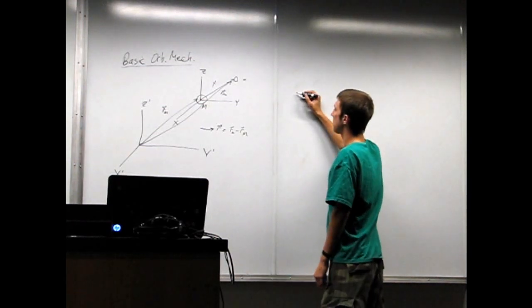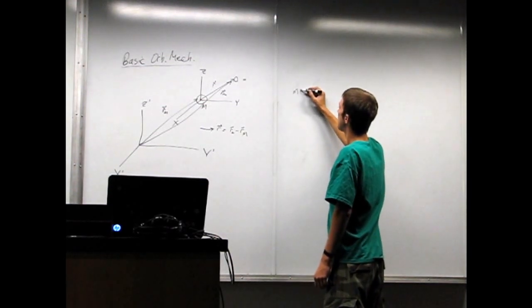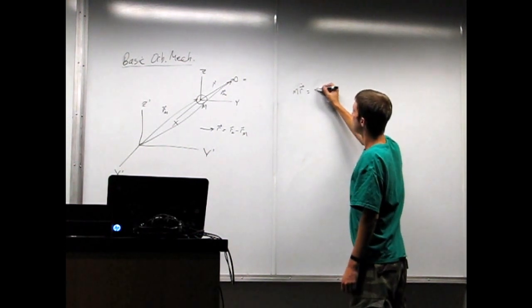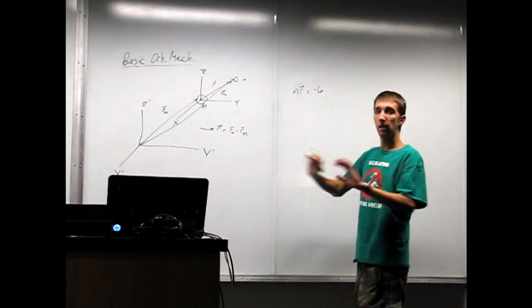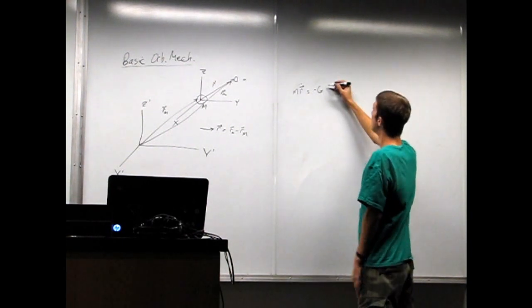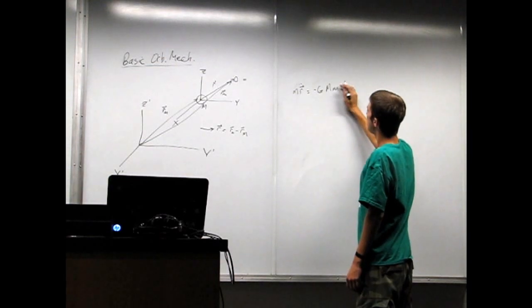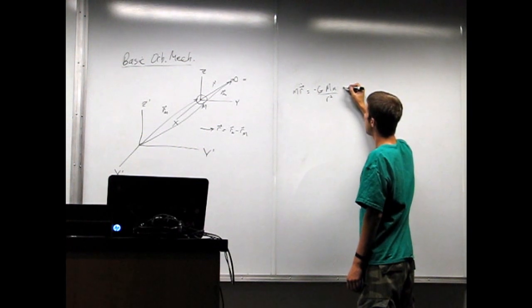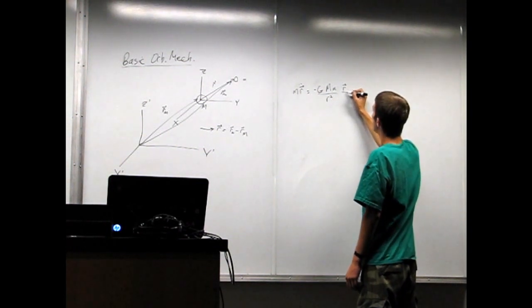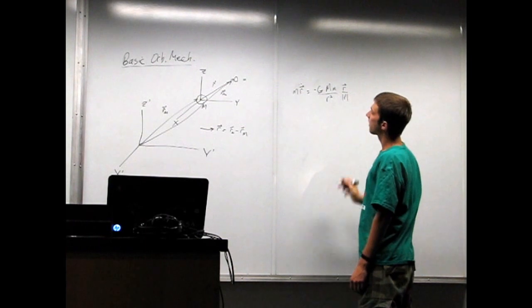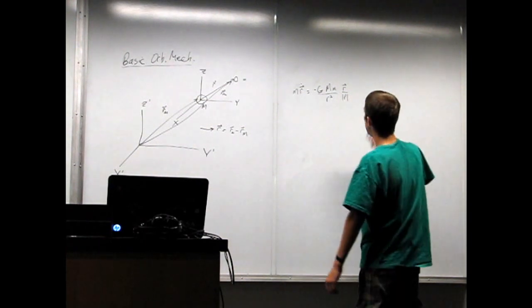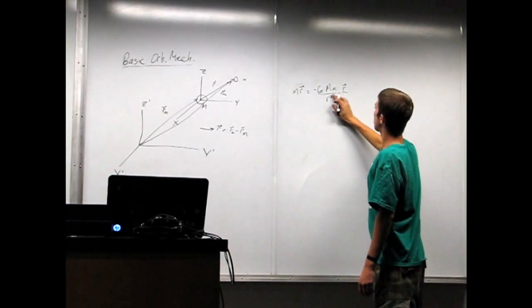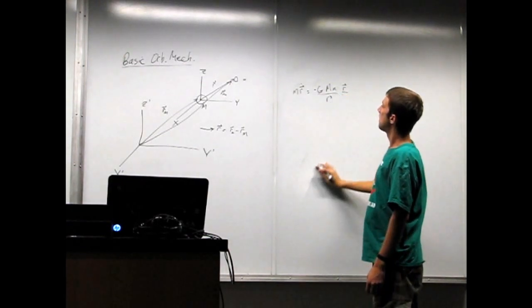So, Newton's law of gravity, basically, mass times the acceleration is equal to this constant called g, it's the same everywhere in the universe, times big mass times little mass, divided by the distance between them squared, and then since it's a vector, multiply by the vector pointing in the direction of R. And you can make this R cubed if you want.